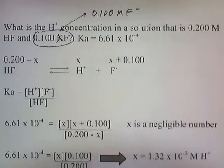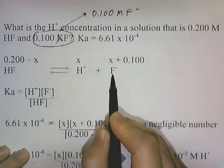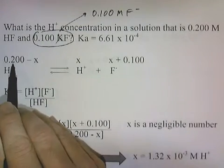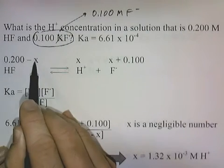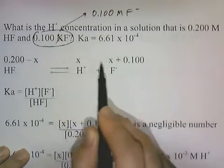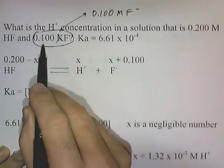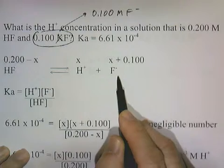We're going to let x equal the amount of HF that ionizes. The dissociation reaction of HF is HF dissociates to form H+ and F-. We start with 0.2 molar of HF. x amount of it dissociates. The amount of HF remaining is going to be 0.2 minus x. For every x amount of this that dissociates, you're going to get x amount of H and x amount of fluoride. Since we've added 0.1 molar of fluoride, we have to add 0.1 fluoride there.